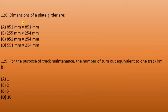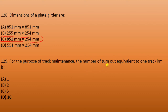Next: the dimensions of plate girders used in BG should be 851 mm to 254 mm. Next: for the purpose of track maintenance, the number of turnouts equivalent to one track kilometer is 10. So one track kilometer is equivalent to 10 turnouts for track maintenance purposes.